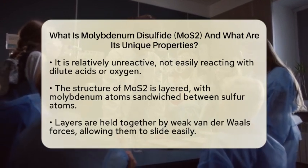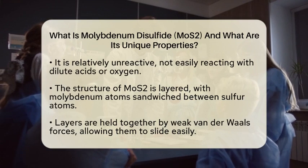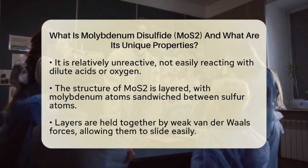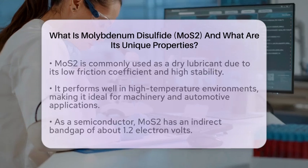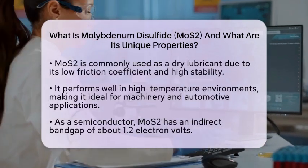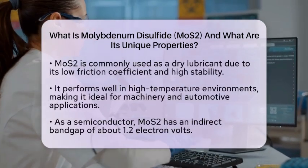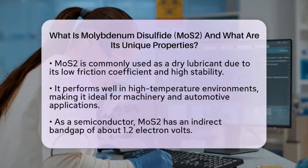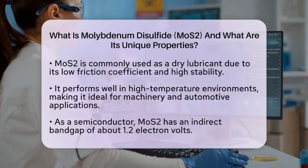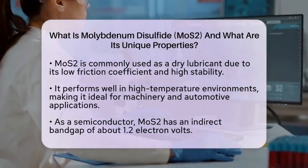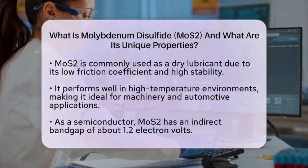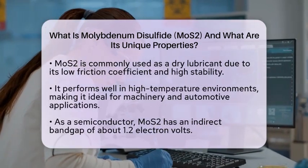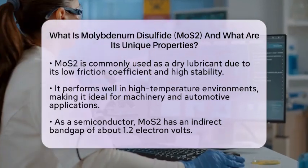Molybdenum disulfide has a range of applications due to its unique properties. For lubrication, it is widely used as a solid lubricant because of its low friction coefficient and high chemical stability. It performs well even in high temperature environments, making it a popular choice in machinery and automotive applications.